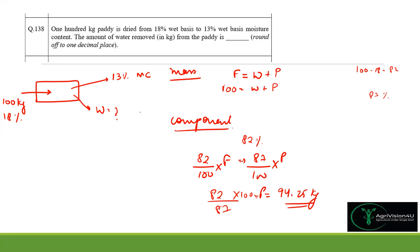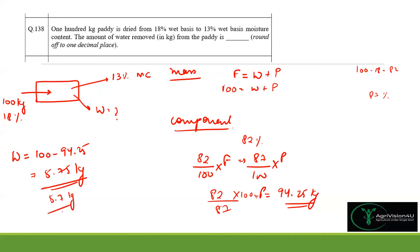The dried paddy output is approximately 94.25 kg. From the mass balance, the amount of water removed equals 100 − 94.25 = 5.75 kg, which rounds to 5.7 kg. Therefore, 5.7 kg of water is removed from 100 kg of paddy to dry it from 18% to 13% moisture content.